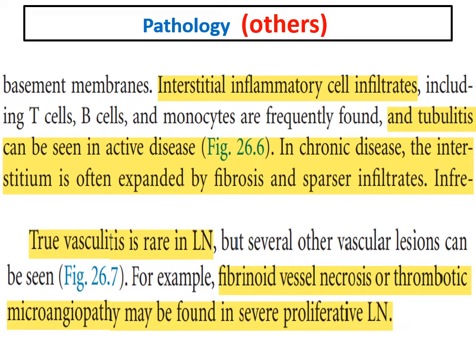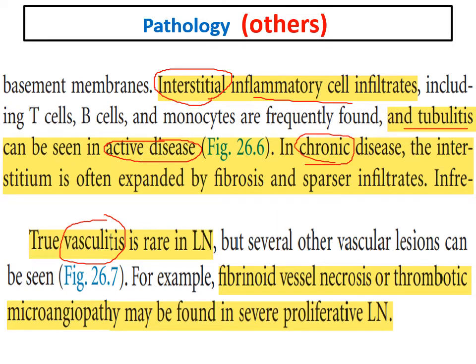The infection in lupus nephritis involves not just the glomerulus but also the interstitium and blood vessels. In active disease, there is interstitial inflammation and tubulitis; in chronic disease, there is interstitial fibrosis and tubular atrophy. True vasculitis is rare in lupus nephritis, but fibrinoid vascular necrosis or TMA can be found, especially in severe classes.